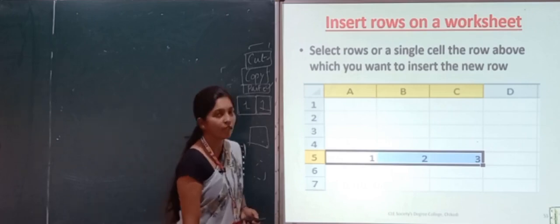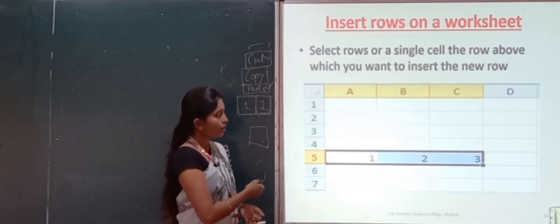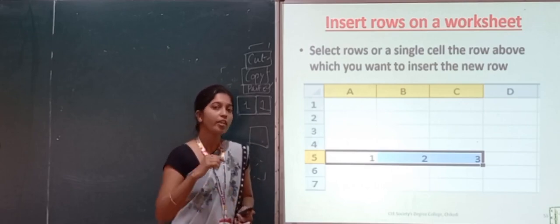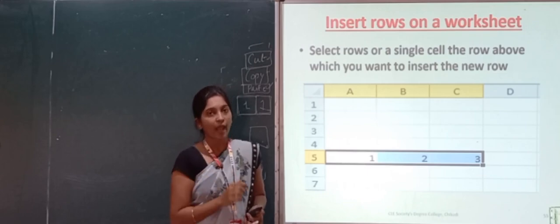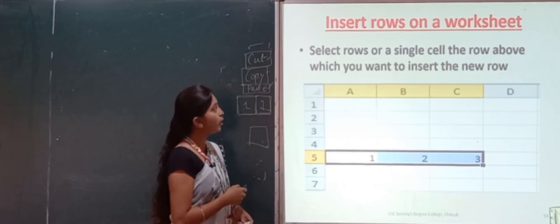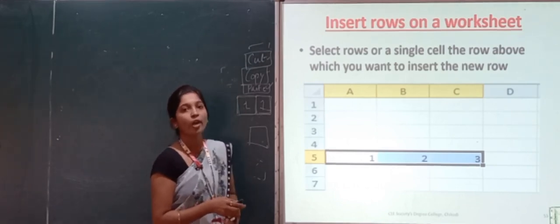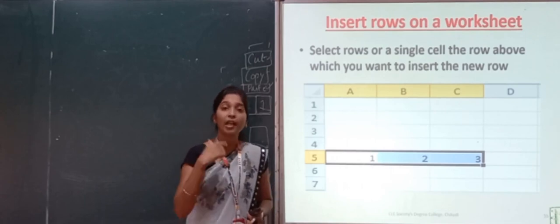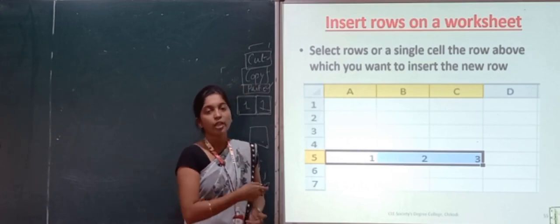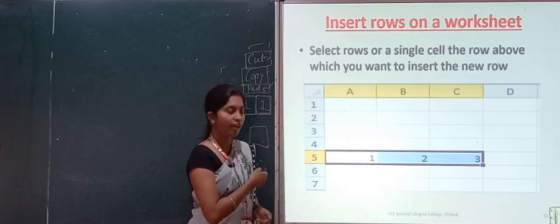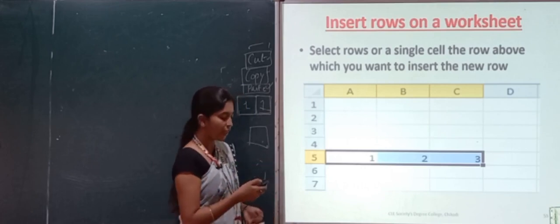Next, we will see how to insert rows on a worksheet. Suppose you have already entered data and now need an extra row to enter more data. What we have to do is select the row — or a single cell in the row — above which you want to insert the new row. For example, I have selected the 5th row because I need one extra row above it.